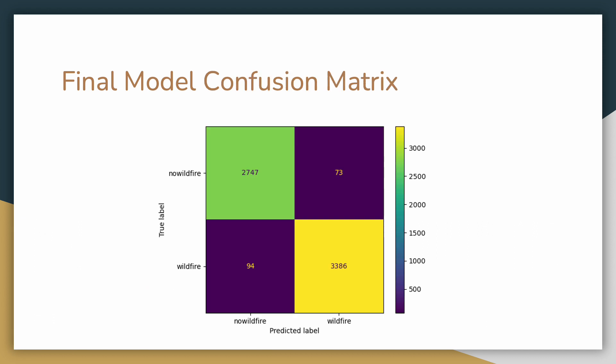Let's take a look at the final model confusion matrix to get an alternate perspective on how our model performed. It predicted no wildfire correctly 97.4% of the time, and it predicted wildfire correctly 97.2% of the time. As we can see, both of those, that top left corner, the bottom left, and the bottom right corner,